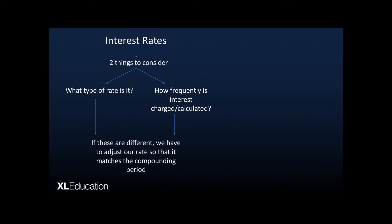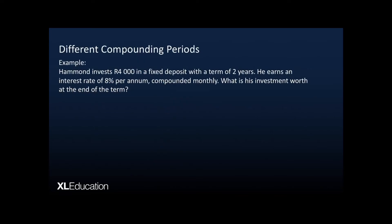If the type of rate is different to the frequency with which it is compounded, we have to adjust the rate so that it matches the compounding period. So if you've got an annual interest rate but you are compounding it monthly, you've got to adjust that annual interest rate to turn it into a monthly interest rate so that the interest rate matches the compounding period.